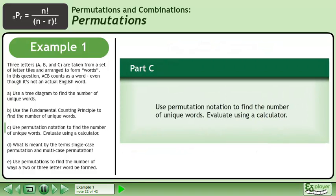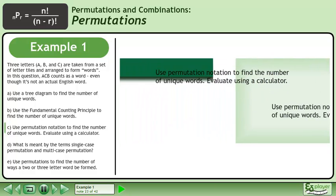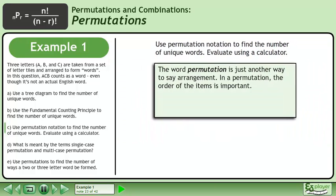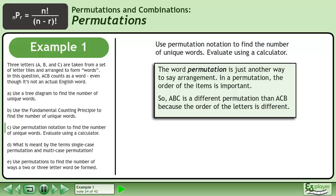In part C, use permutation notation to find the number of unique words. Evaluate using a calculator. The word permutation is just another way to say arrangement. In a permutation, the order of the items is important. So ABC is a different permutation than ACB because the order of the letters is different.